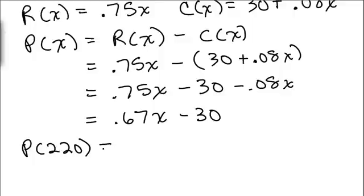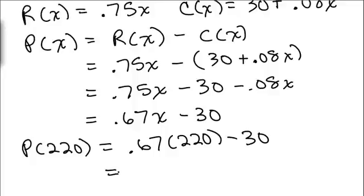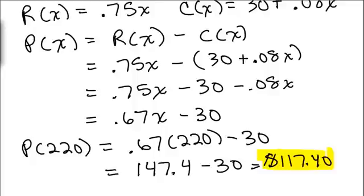We could put that directly in and say 0.67 times 220 minus 30 and compute that.